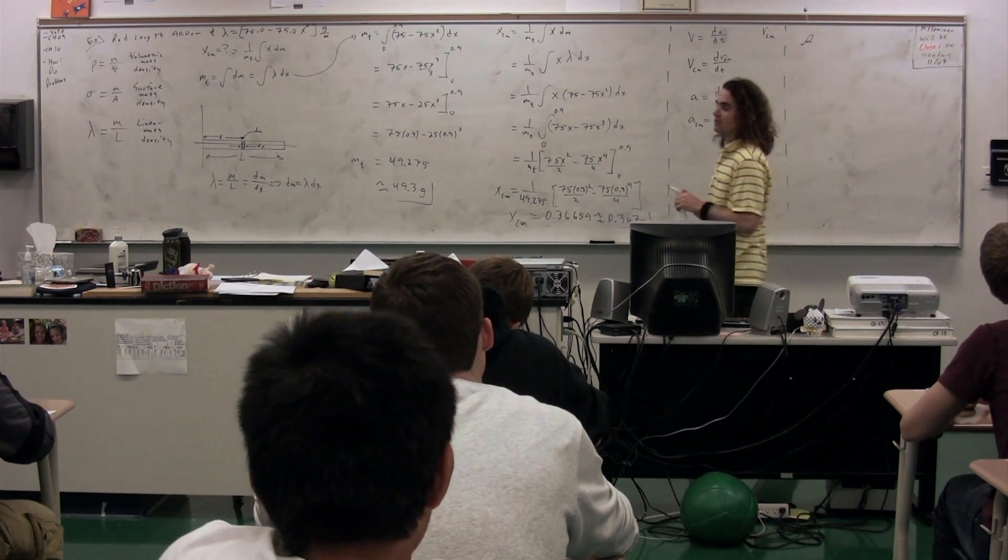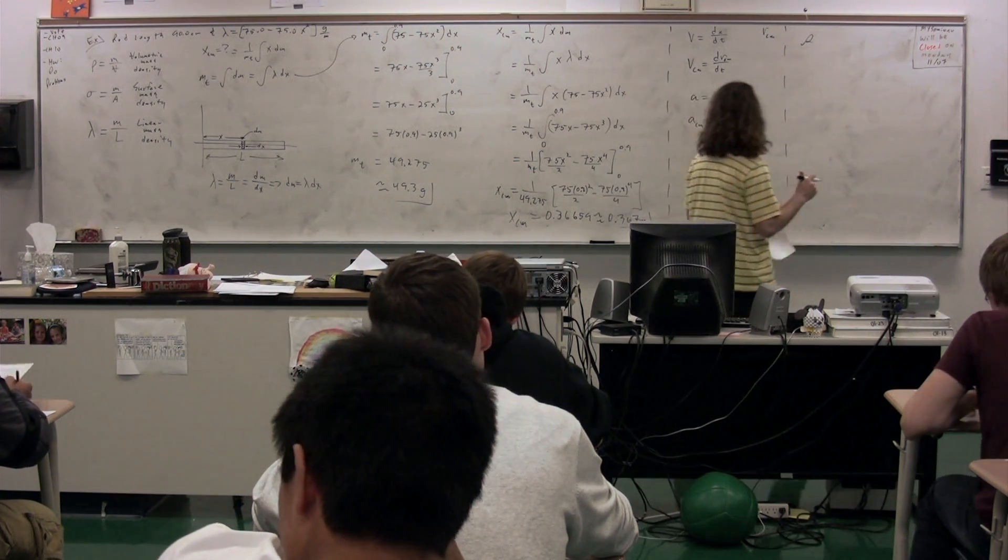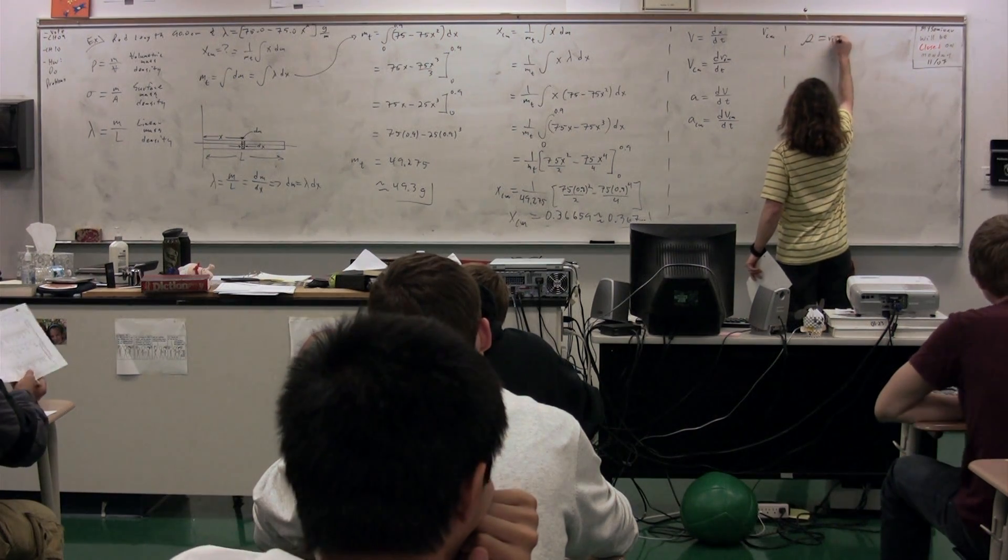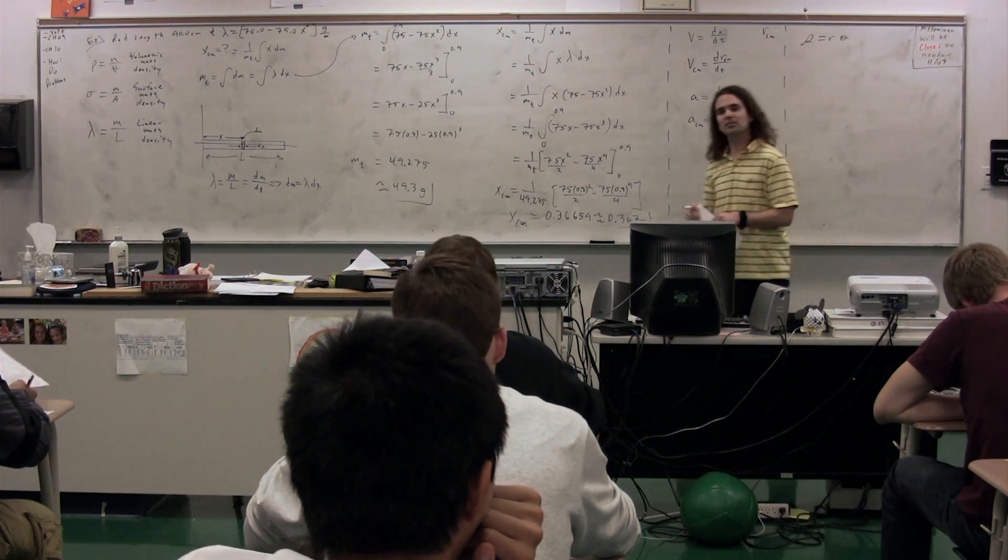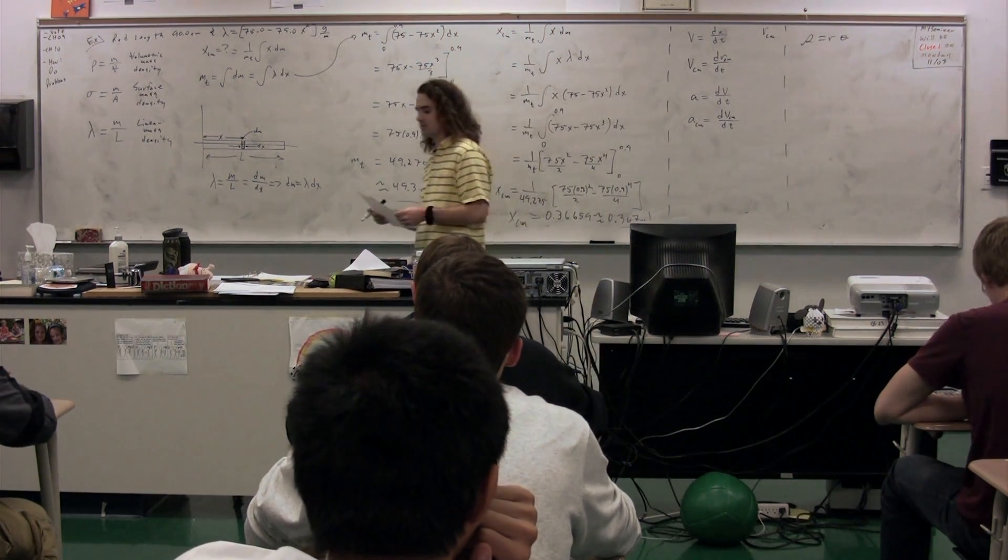Theta over r. Close. You have the two right symbols, but rather than dividing them, you should multiply them. S equals r times theta. The arc length is equal to r times theta.